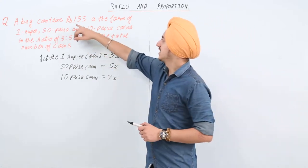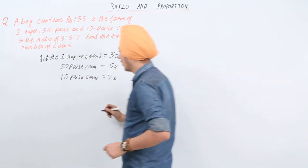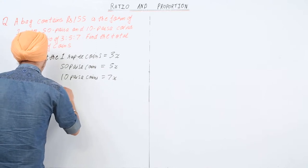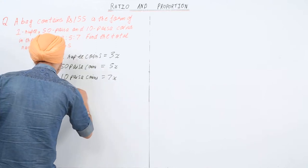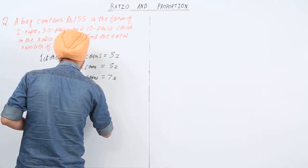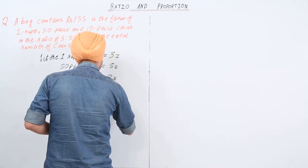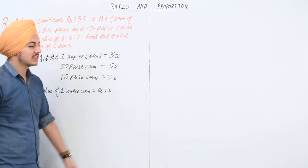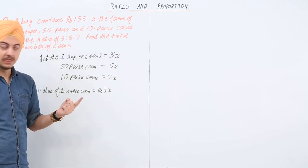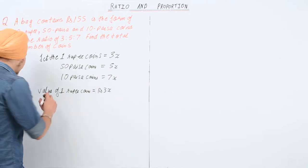What we are given is the value of these coins in the bag, so we find out the value of all these coins. The value of 1 rupee coins is equal to rupees 3x, because there are 3x number of coins each worth 1 rupee, so 3x is the total value of 1 rupee coins.